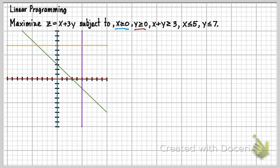And then the green one was my x plus y equals 3, and then the purple one was my x equals 5, and then the orange one was my y equals 7. So there's my lines there.